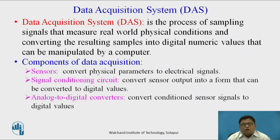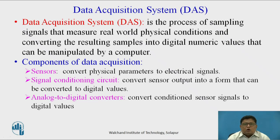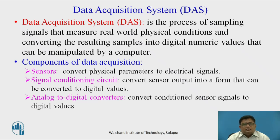As far as electronic products are concerned, most electronic products nowadays consist of a processor or controller. In most products, they require sensing some parameters from the real world. For example, take a product like the temperature controller — the very first step is to sense the temperature, and for that we use different available sensors.